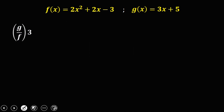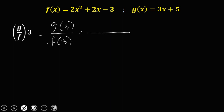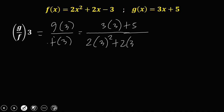Now, how about this one — the quotient? This equation is equal to g of 3 over f of 3. Substitute, and take note that x is now equal to 3. So from g of x: 3 times 3 plus 5. Then for f of x: 2 times 3 squared, plus 2 times 3, then minus 3.